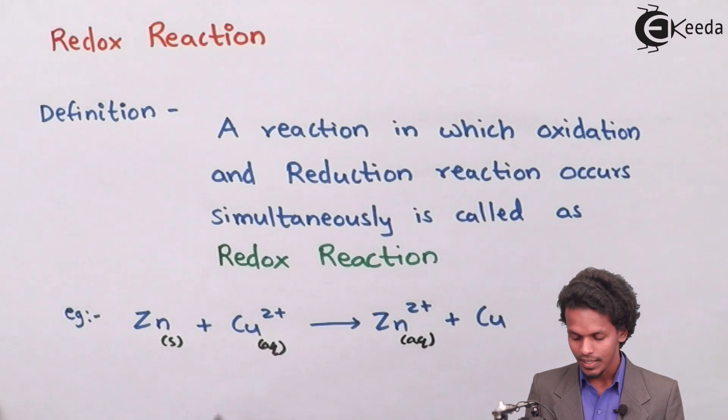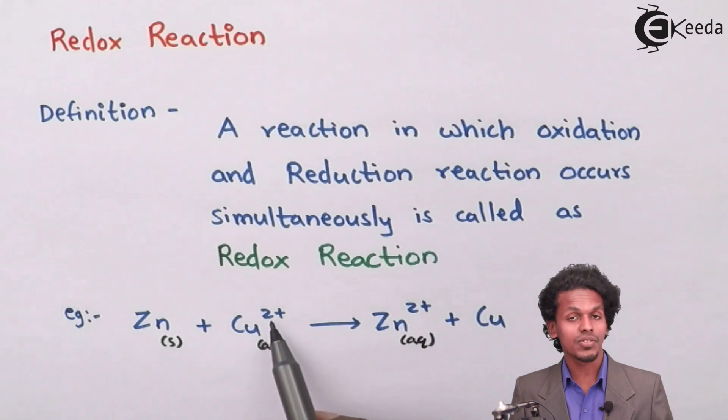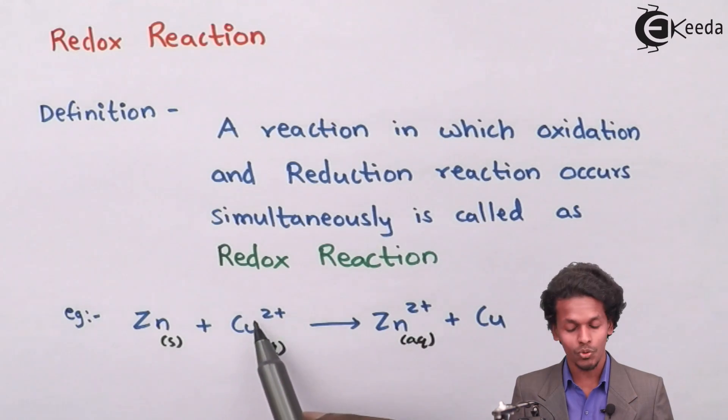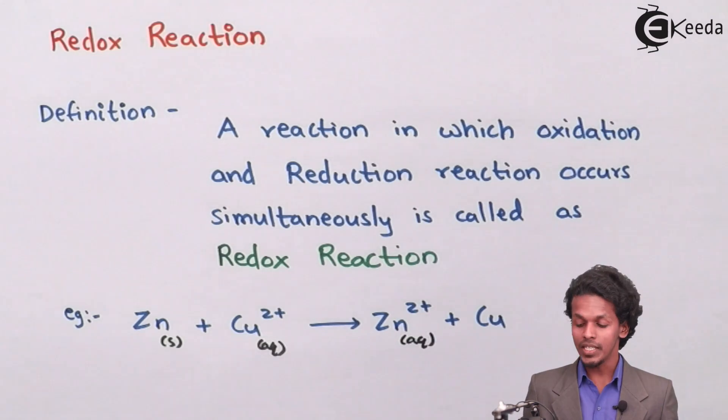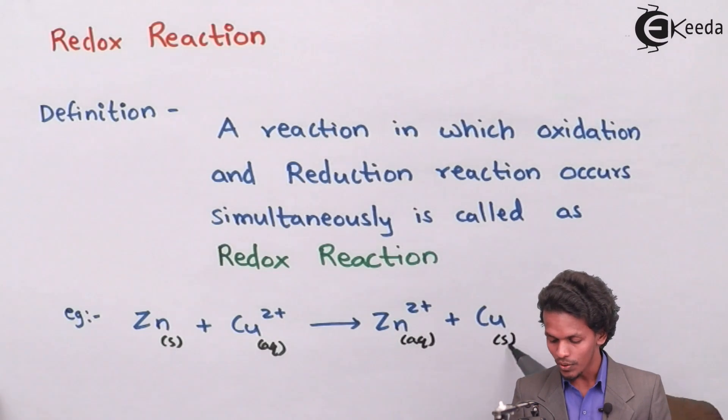which has a 2 plus charge or the oxidation number as 2 plus is now converting into copper which has no charge which is converted into a solid.